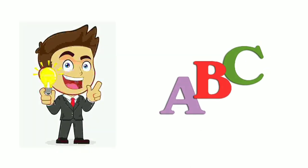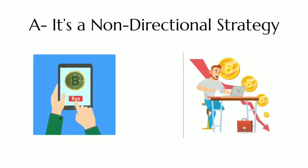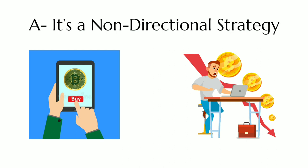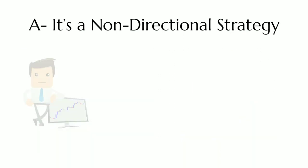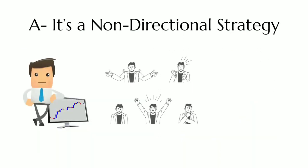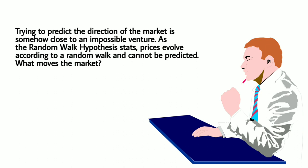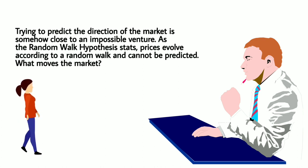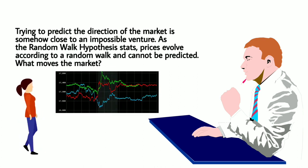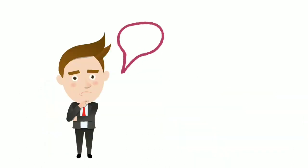Why should you consider grid trading? Here is my ABC on why it is an amazing technique. A: it's a non-directional strategy. This happens to all of us — whenever we buy an asset it dumps, whenever we sell it pumps. As traders, we are all driven by emotions; fear and greed hunt us. We never tend to take advantage of opportunities that price action always gives. Trying to predict the direction of the market is somehow close to an impossible venture.